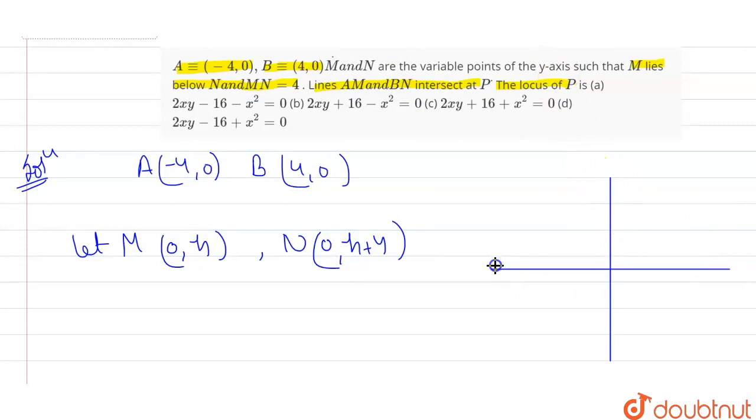So if I draw the coordinate system here, this will be (0, h+4) as point N, and we have point M at (0,h). And these are two points we have on the x-axis: A(-4,0) and B(4,0).